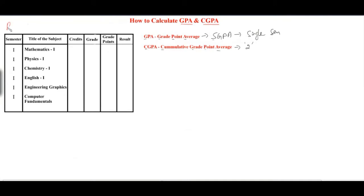For example, we can take this data. Register number 001 has appeared for six subjects in semester one: mathematics, physics, chemistry, English, engineering graphics, and fundamentals. Each subject has its own credits, based on the curriculum. You can cross-check this in your curriculum. In some universities, it is also shown on the mark sheet.